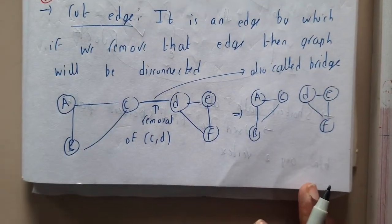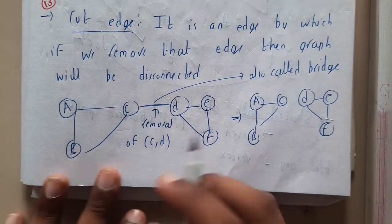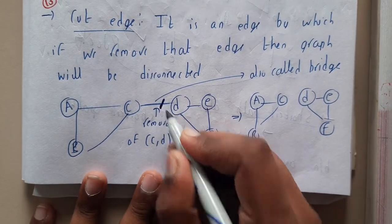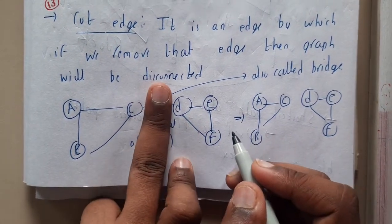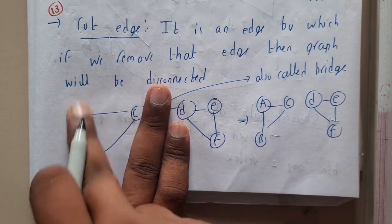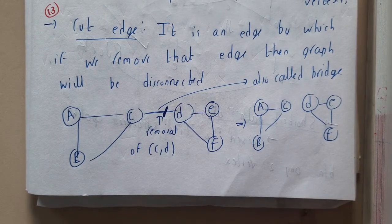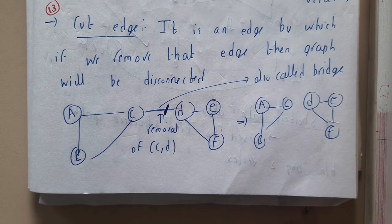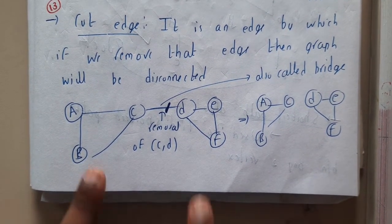If you observe the diagram - I think there is no need to draw the diagram also - so if you observe the diagram, after removing this particular vertex, it will be in this way, right? After removing that vertex, it has become two different graphs, that is, two components.